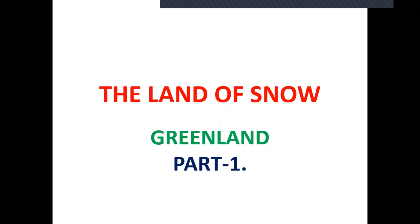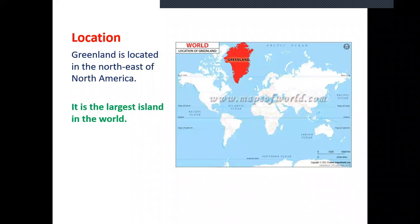Today we study about a land which is located far away from the equator, that is Greenland. Greenland is located in the northeast of North America. It is the largest island in the world. An island means a land which is covered by water on all four sides.